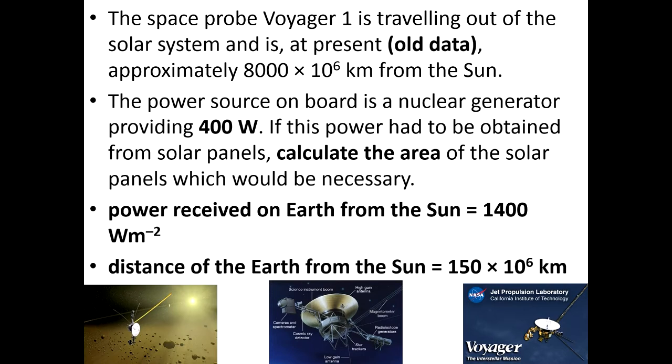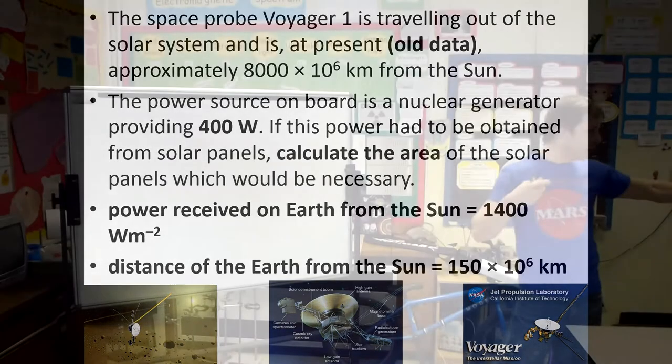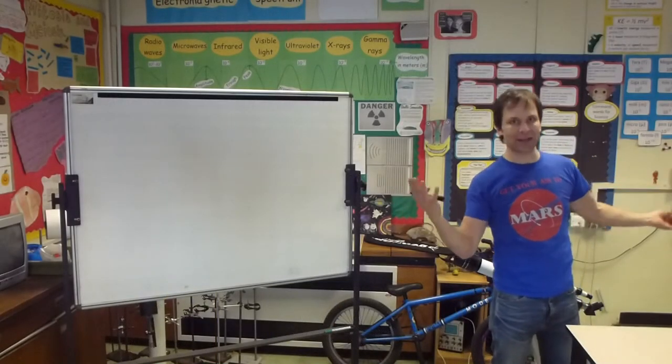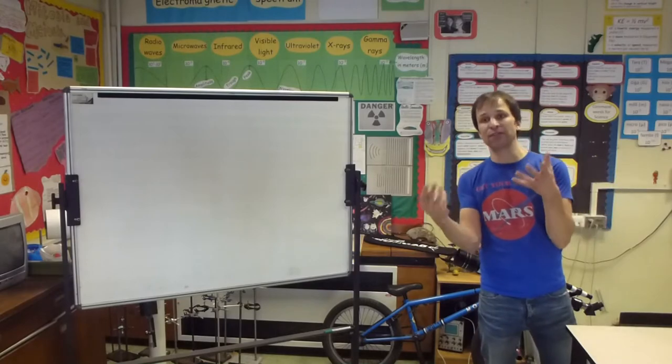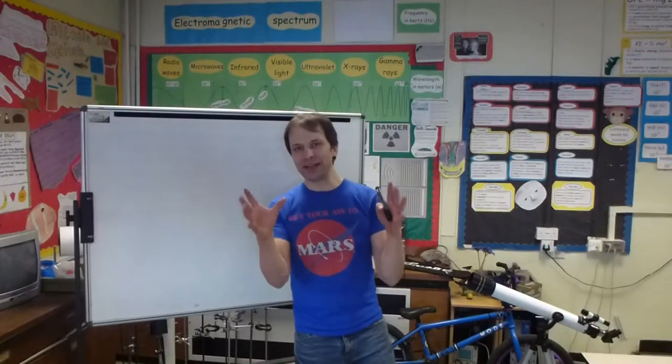As you can see, Voyager needs 400 watts of energy, 400 joules per second, to actually work. This is a bit old data, I think it's probably about 10 years old now. For this particular question, it says Voyager is 8,000 times 10 to the 6 kilometers from the Sun. How big would solar panels have to be to make this work at that distance, to make it receive 400 watts? This is where it gets a bit tricky.